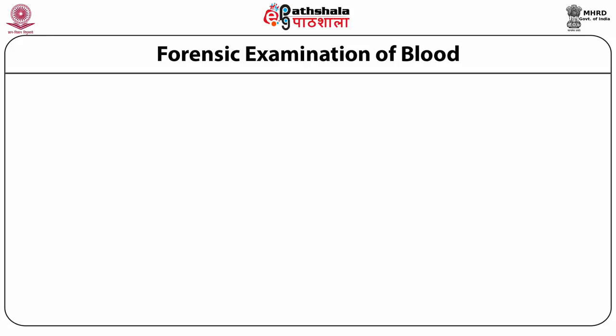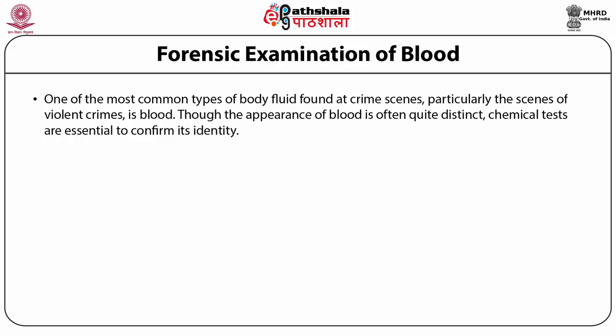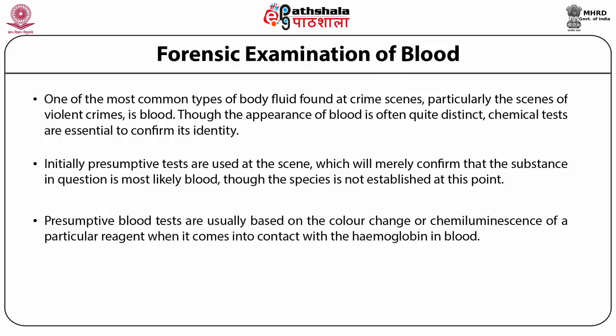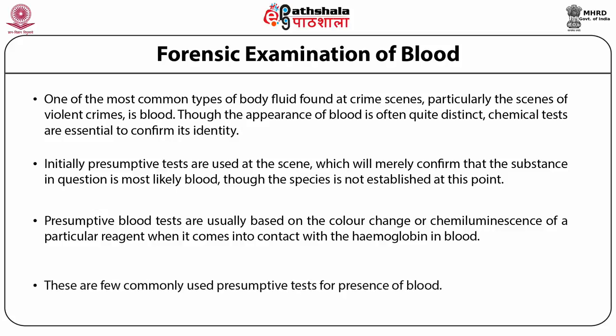Forensic examination of blood: one of the most common types of body fluid found at crime scenes, particularly scenes of violent crimes, is blood. Though the appearance of blood is often quite distinct, chemical tests are essential to confirm its identity. Initially, presumptive tests are used at the scene which will merely confirm that the substance in question is most likely blood, though the species is not established at this point. Presumptive blood tests are usually based on a color change when they come into contact with hemoglobin in blood.